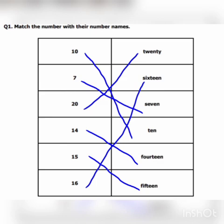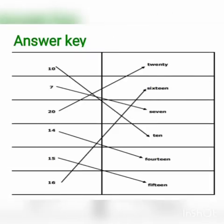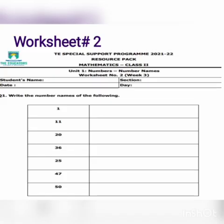Students, we have solved our worksheet number one, question number one: match the number with their number names. This is the answer key of worksheet number one. And now we start solving worksheet number two. Similarly, students, write here your name, section, date, and day.